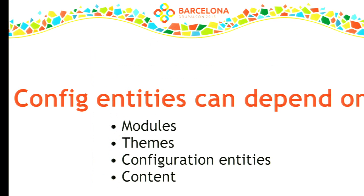This allows us in Drupal 8 to build up a much better picture of the potential consequences of an action. It's also going to make things significantly more robust — if configuration still exists but has no meaning, your site is broken. In Drupal 8, as long as all config entities are declaring their dependencies correctly, that won't happen. So what can configuration entities depend on? They can depend on four types of things: modules, themes, other configuration entities, and content.